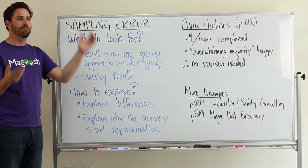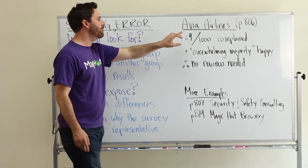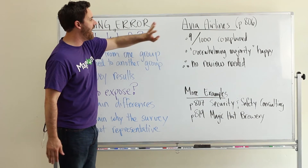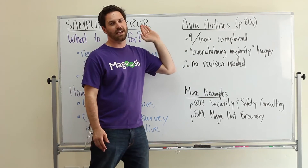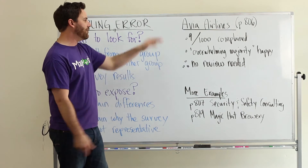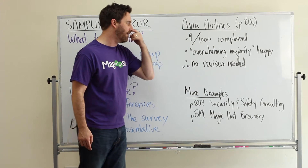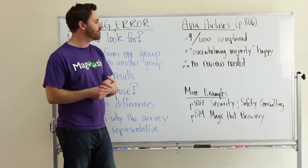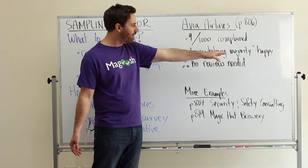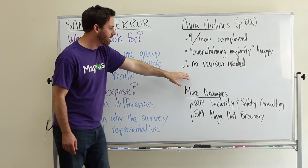Let's look at an example. If you go to page 806 in the Official Guide to the GMAT, there's an argument about Avia Airlines. You can also get this online at MBA.com — they have a PDF of all of these arguments. In this argument, they say that nine out of a thousand people complained about the baggage handling services at this airline, and then they conclude that there is an overwhelming majority that are happy.